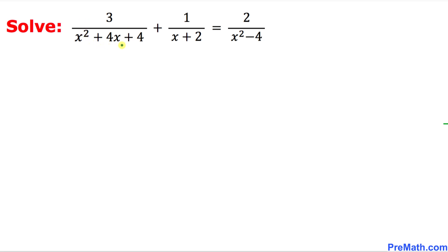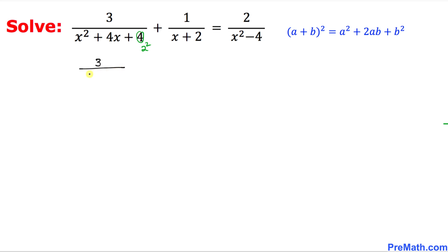Look at the very first fraction on the left hand side. In the denominator, this 4 could be written as 2 squared. The denominator represents a perfect square according to the fact: (a + b)² = a² + 2ab + b². So this first fraction can be written as 3 over (x + 2)².